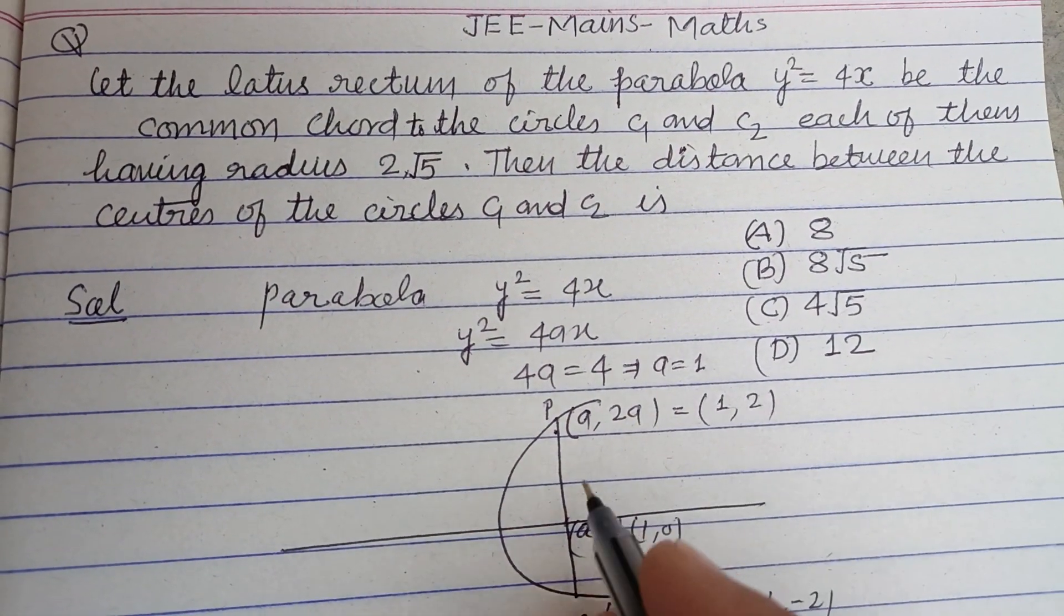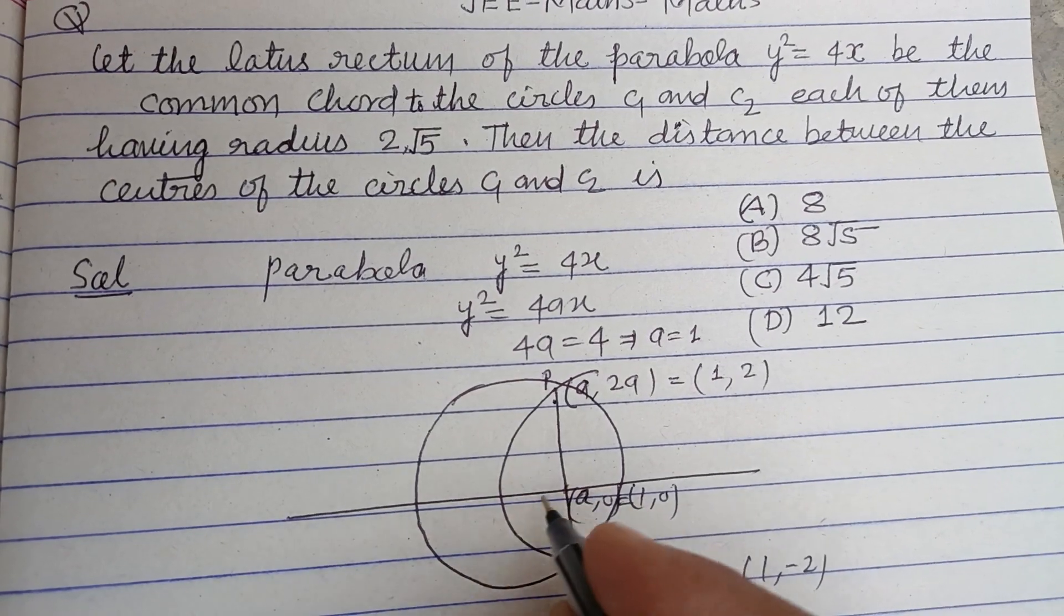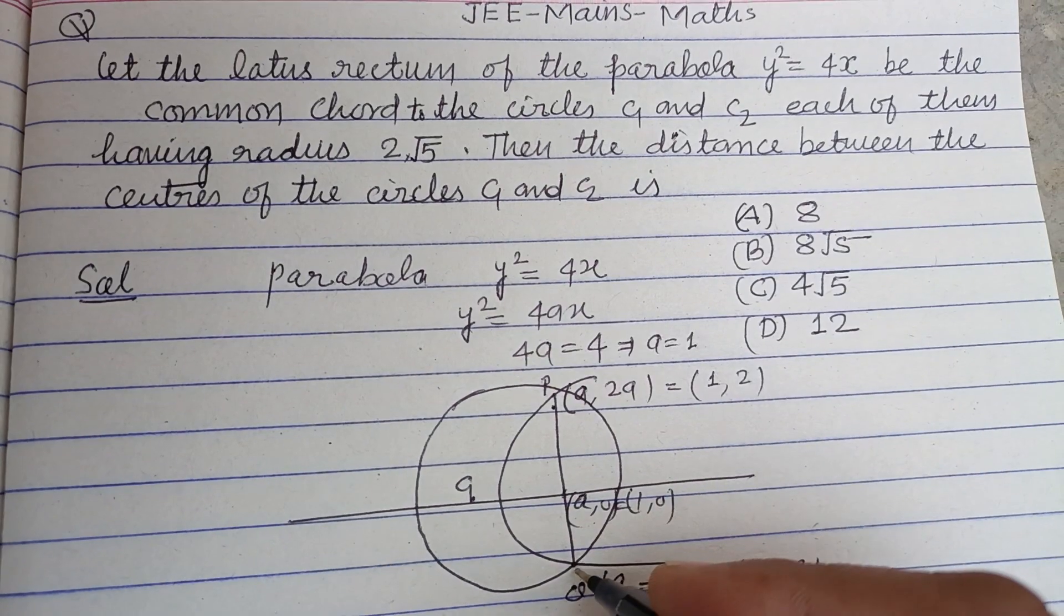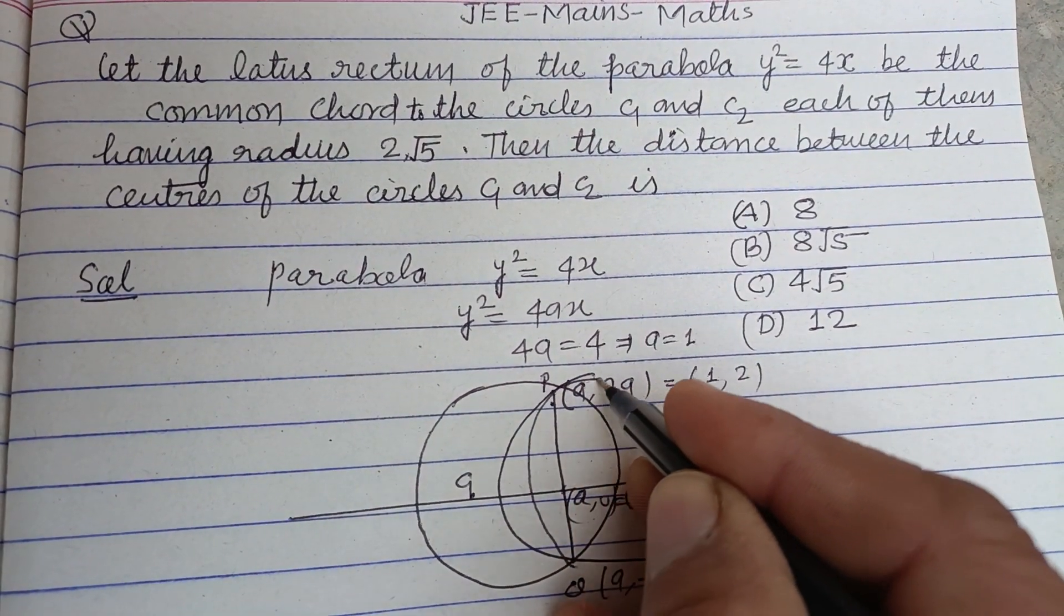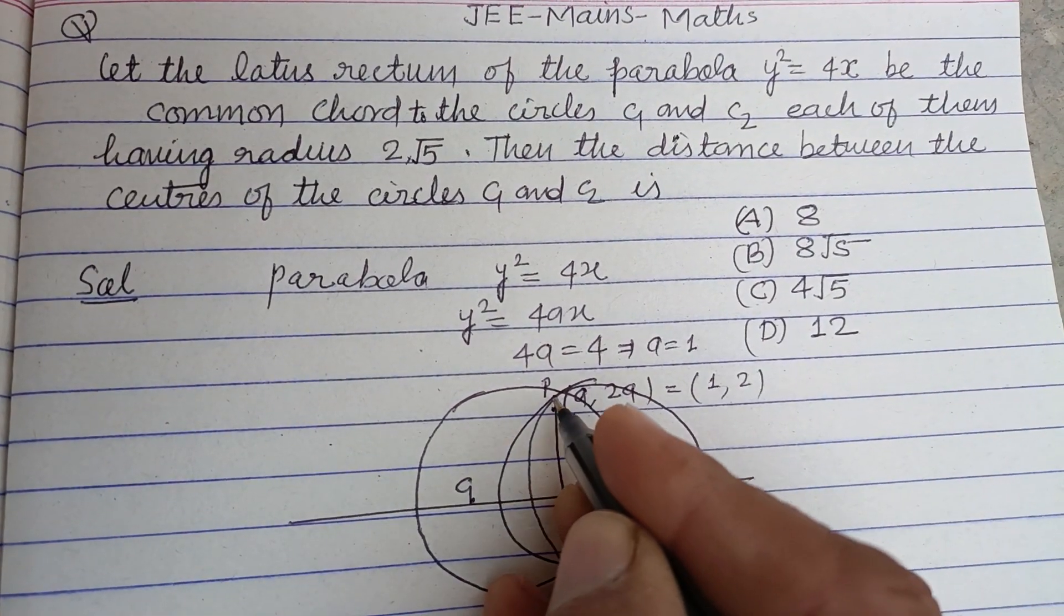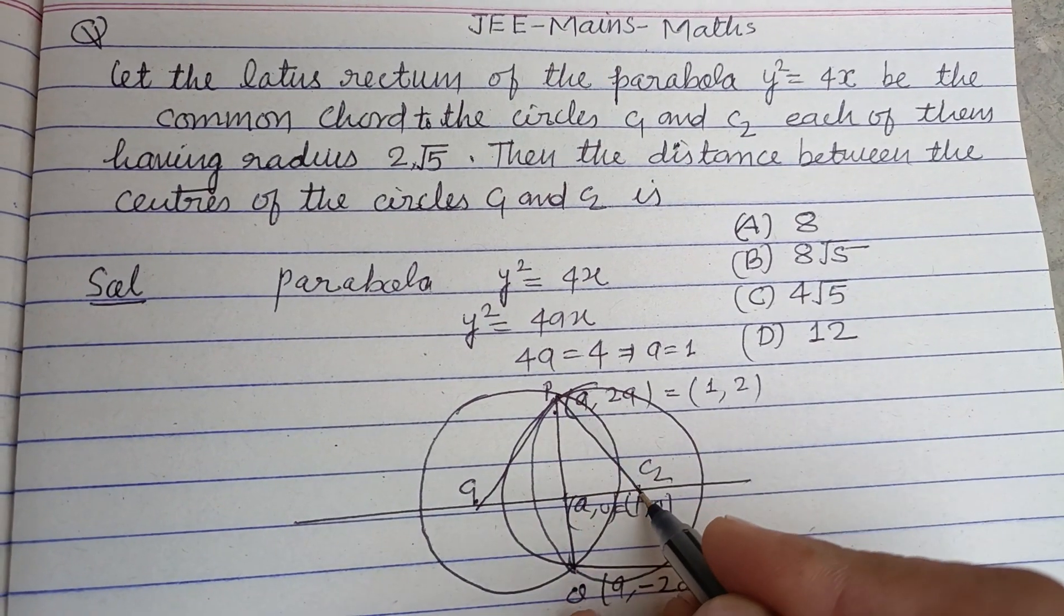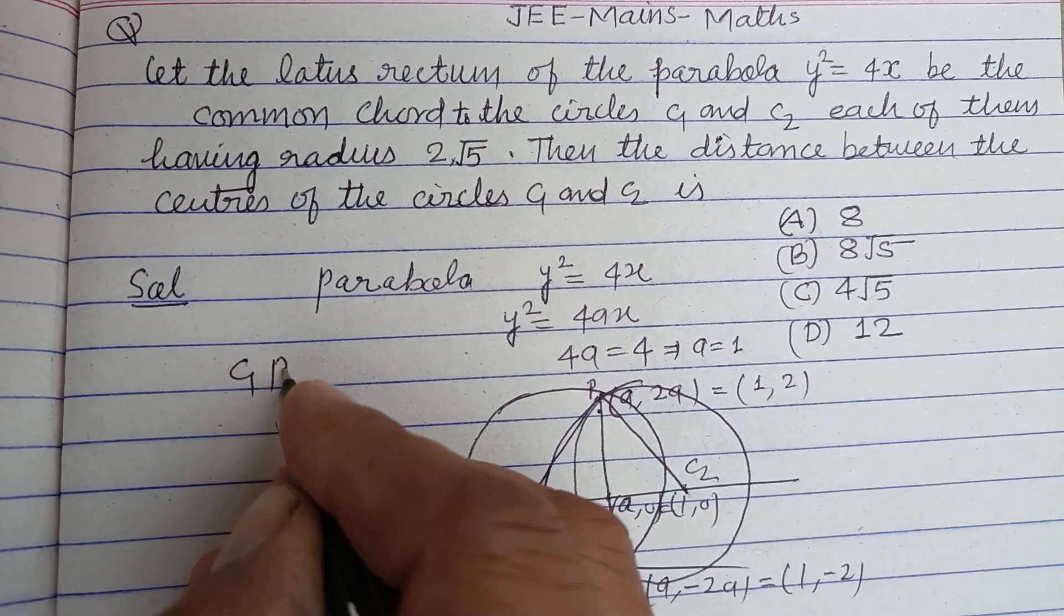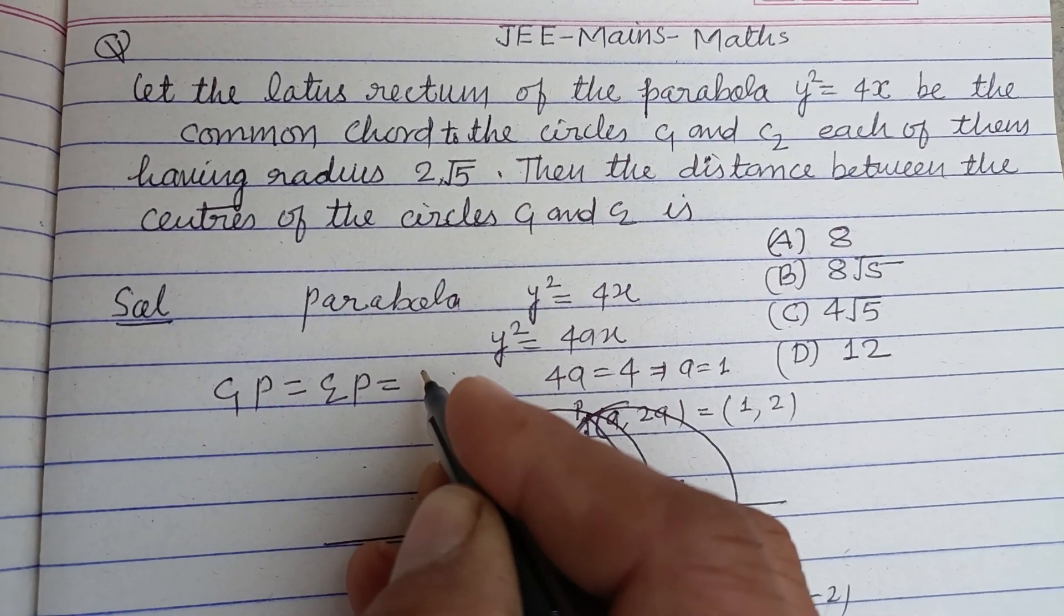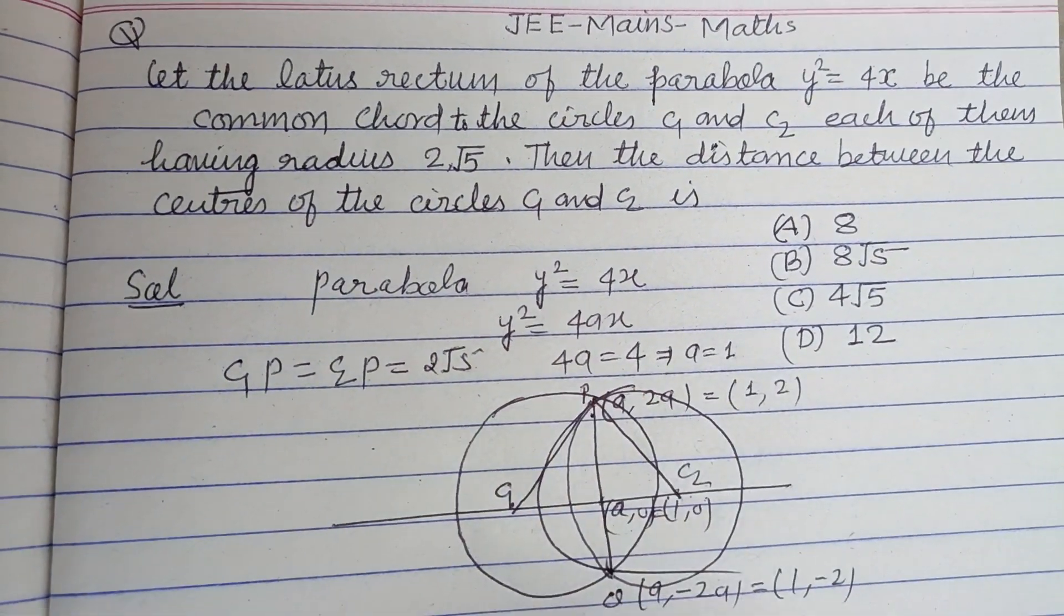So let this be circle C1 with center C1, and another circle with center C2. The radius of each circle is given to us: C1P = C2P = 2√5.